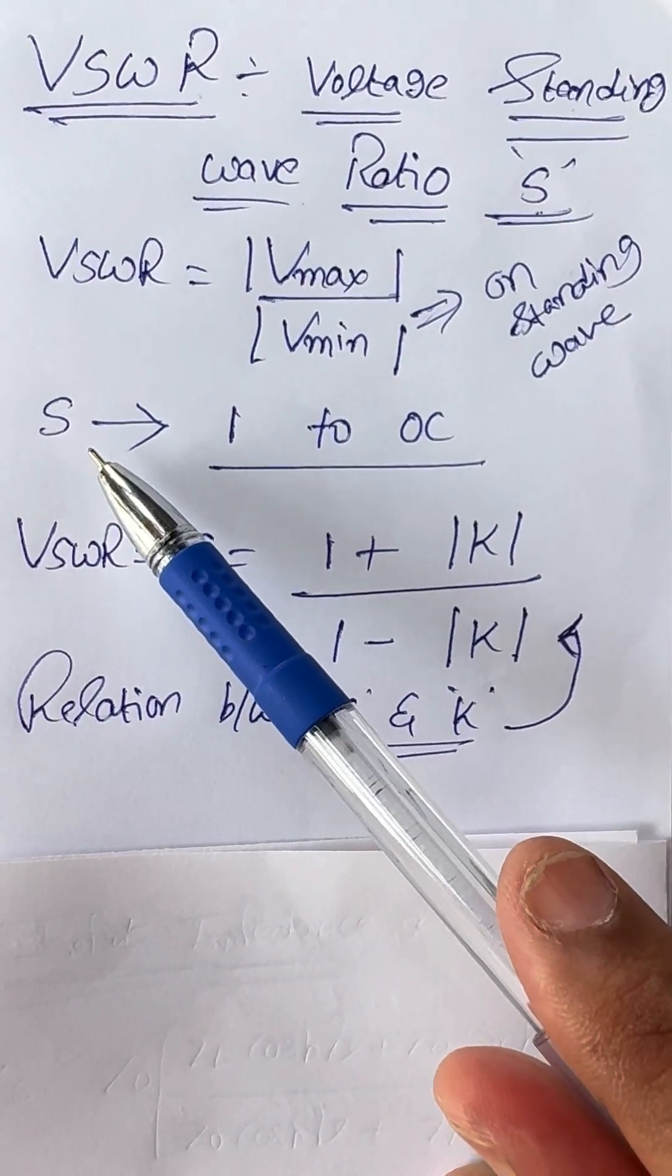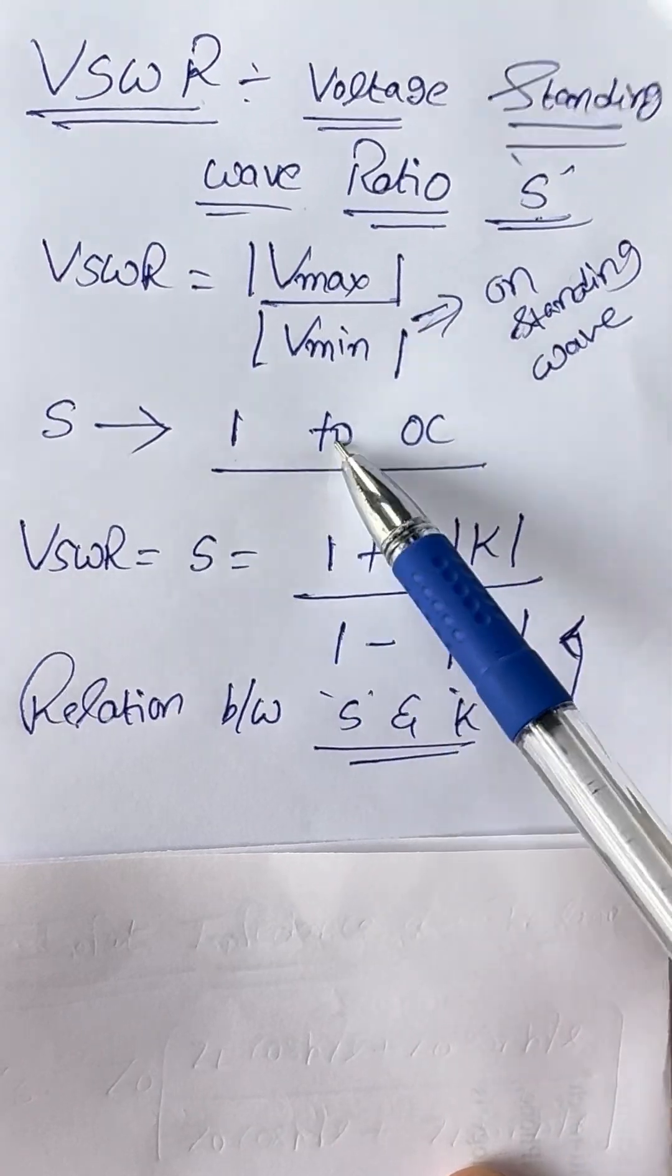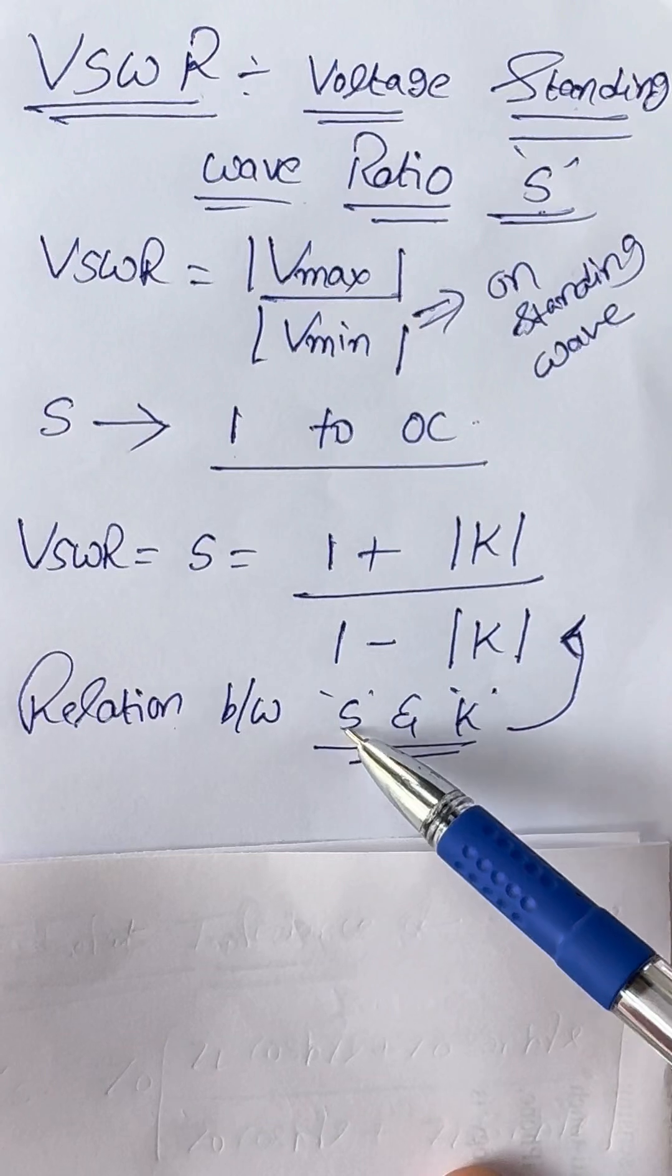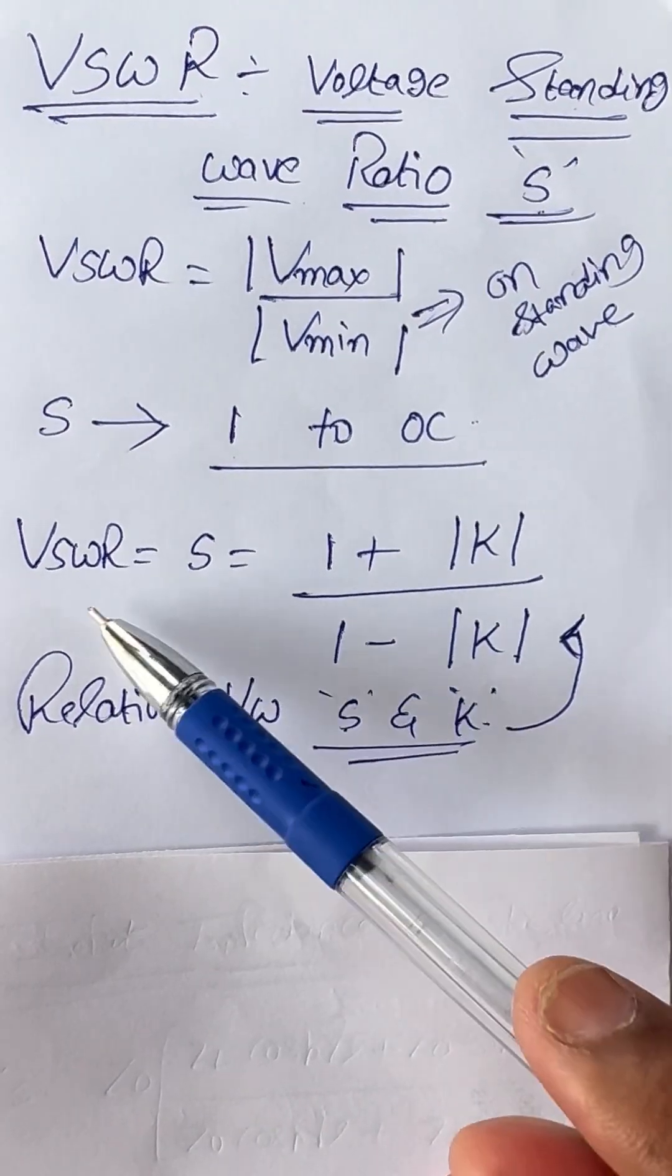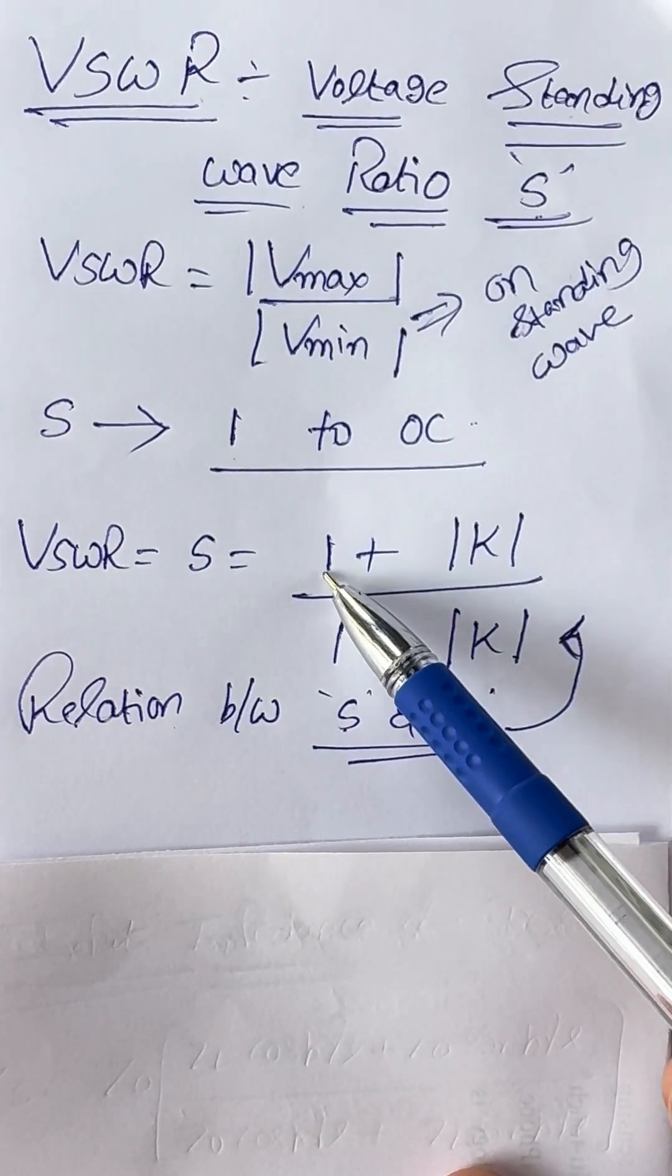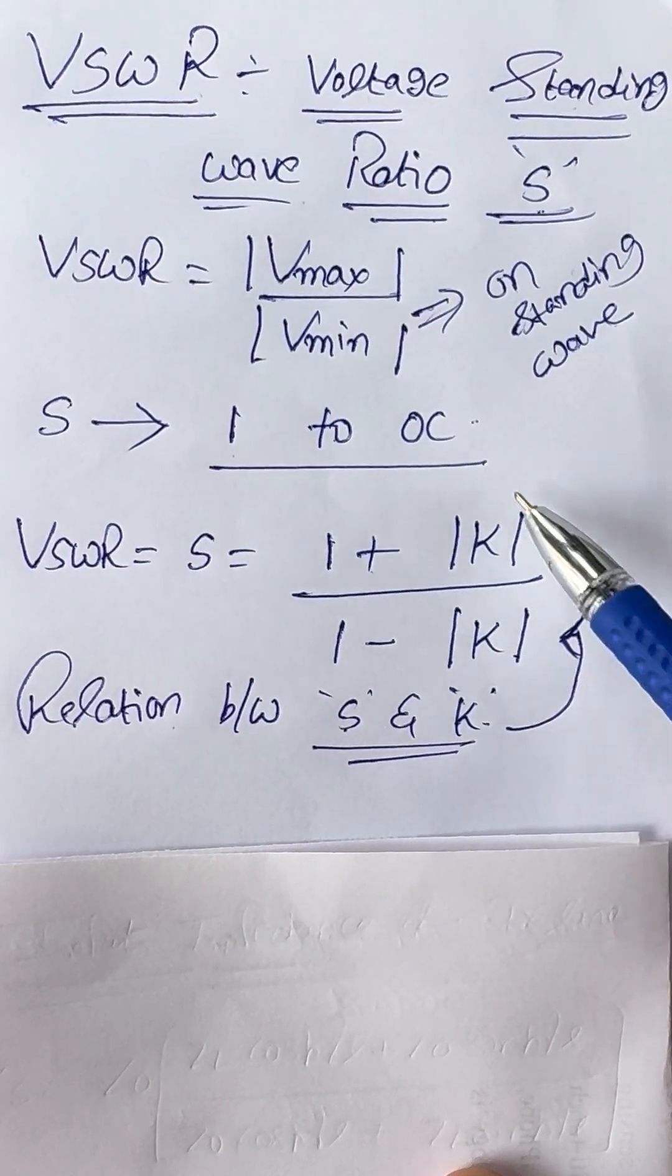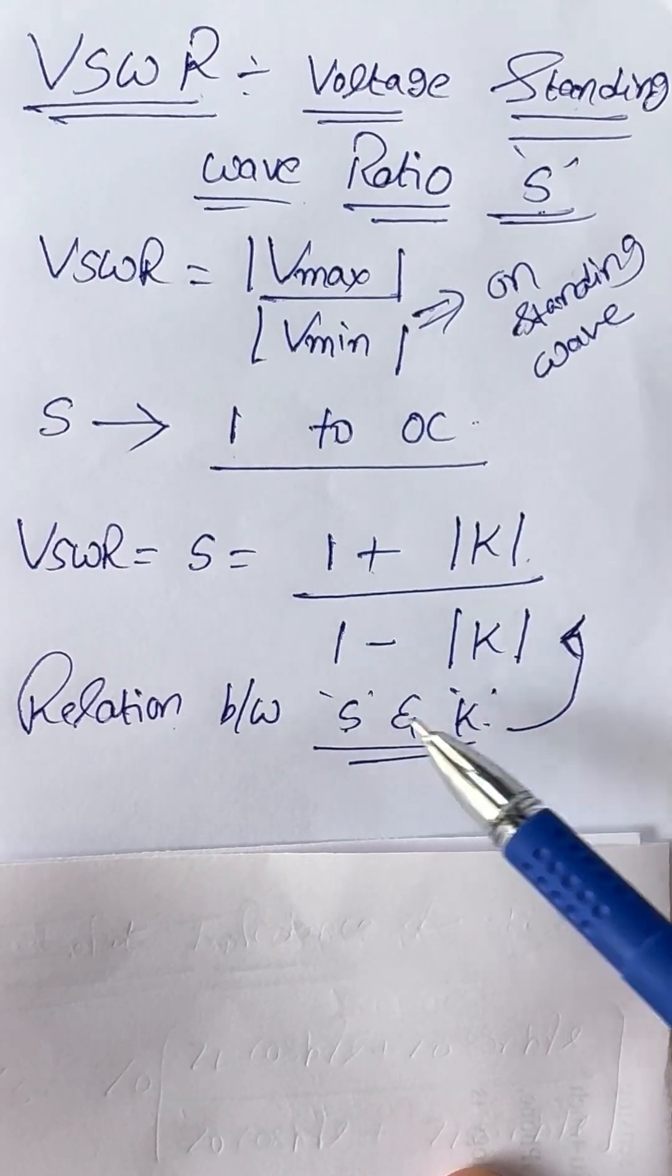The range of VSWR, that is S, is 1 to infinity. And the relation between S and K is VSWR equals 1 plus mod K divided by 1 minus mod K.